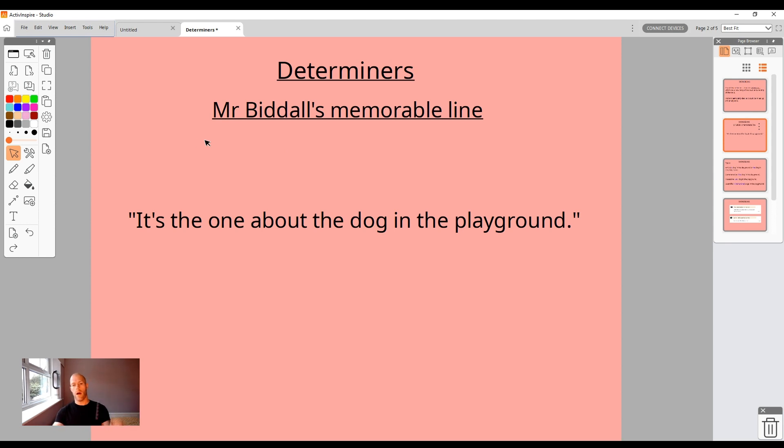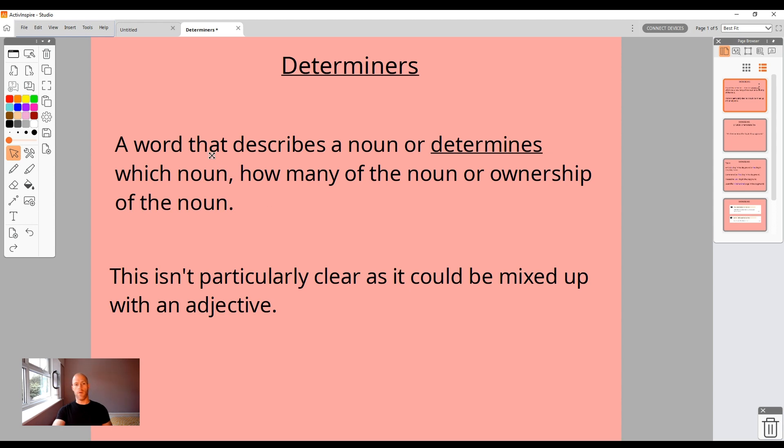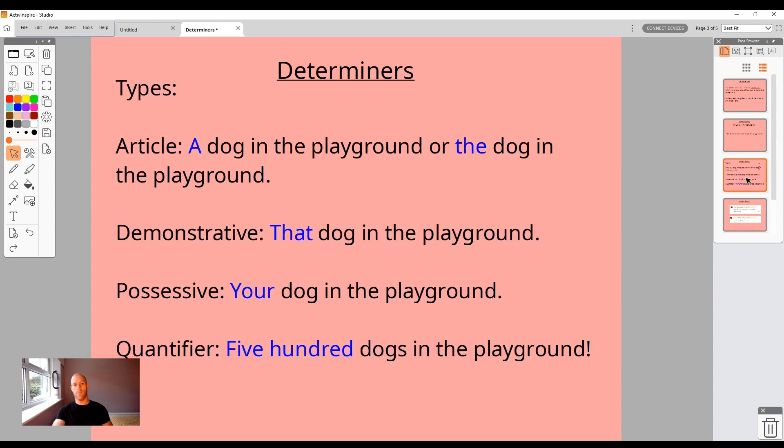I'll give you some examples. The definition we gave: a determiner is a word that describes a noun or determines which noun, how many, or the ownership of a noun. Now to go to my dog in the playground example, there are different types of determiner. One type is called an article.